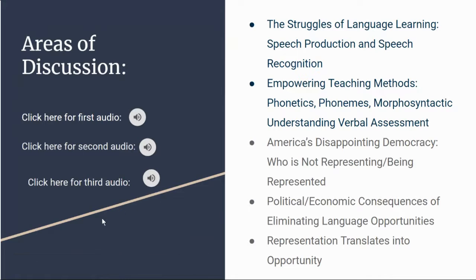To go along with the educational tools and strategies for English learners, we will also discuss and highlight the political and economic consequences of eliminating language opportunities, America's disappointing democracy, who is not representing and who is not being represented, and how the representation translates into opportunity for Hispanic students. Through these areas of discussion, we hope to demonstrate the failures of the U.S. democratic system, as well as the educational system, to meet the needs of diverse language learners and speakers in the American system.